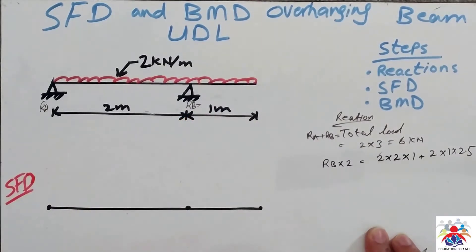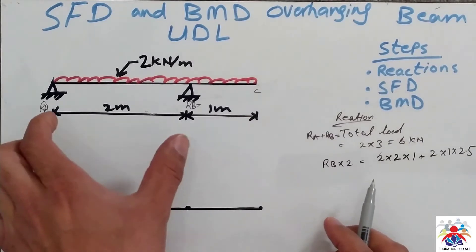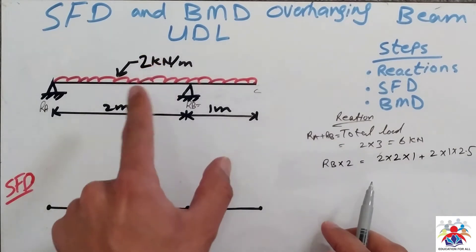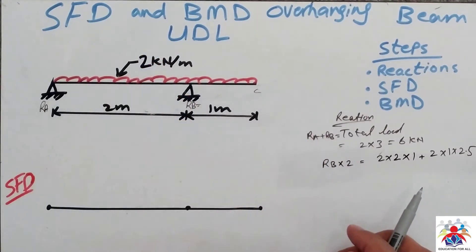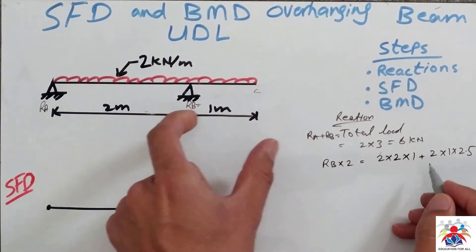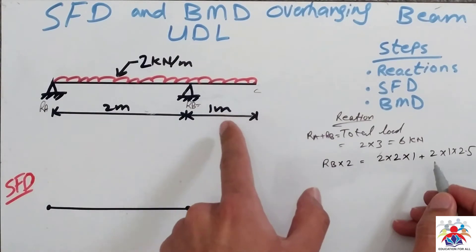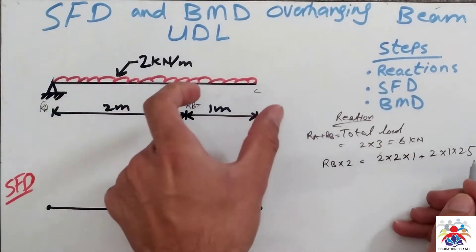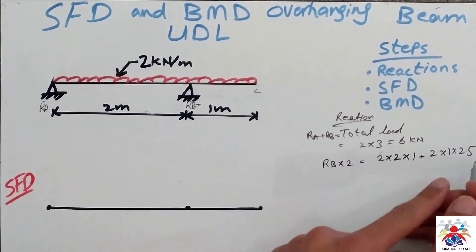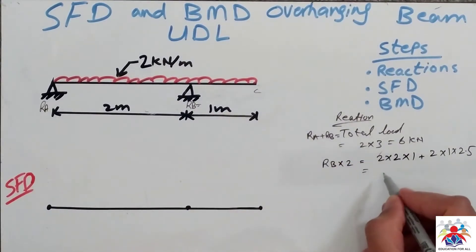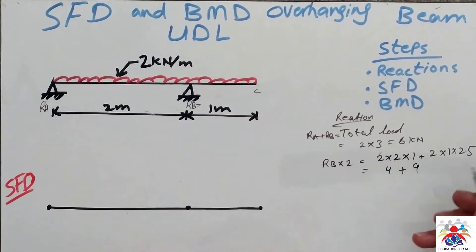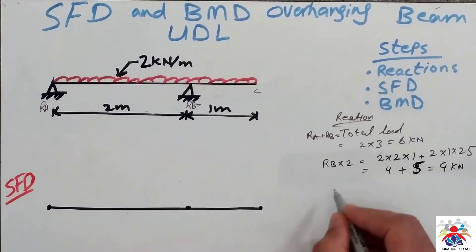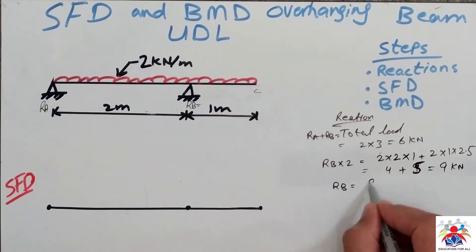I have divided this beam into two parts: from A to B, then from B to C. From A to B is 2 multiplied by 2 multiplied by 1, because UDL always acts at the middle of the span. Then I have another part B to C which is 2 multiplied by 1 multiplied by 2.5 — this is 2 meters and 1 meter, so half of 1 meter is 0.5, making the whole distance 2.5.